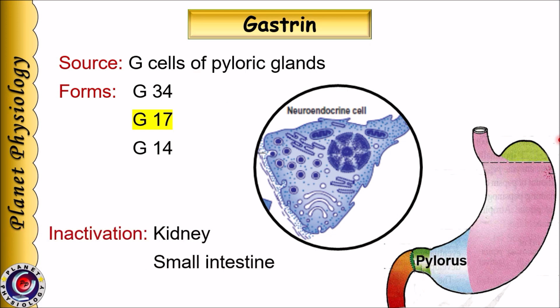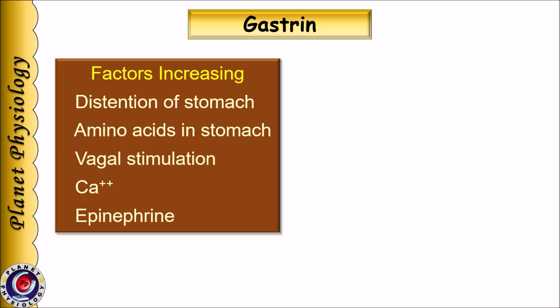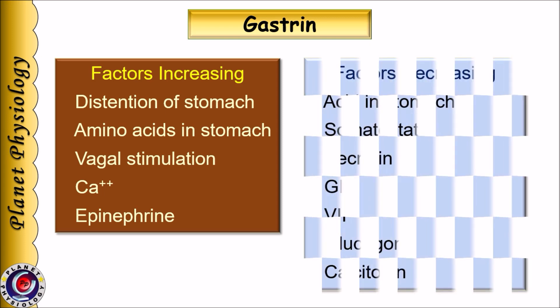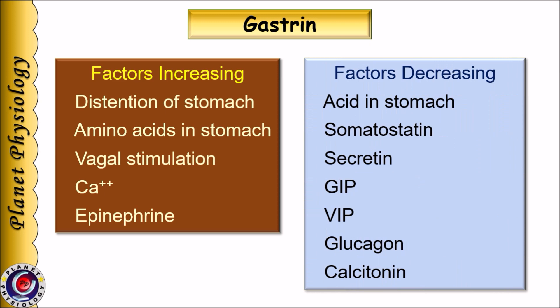G17 has a half-life of two to three minutes in circulation and is then inactivated in the kidneys and small intestine. Gastrin secretion is increased by distension of the stomach, presence of amino acids in the stomach, vagal stimulation, calcium ions, and epinephrine. Its secretion is decreased by excess acid in the stomach — this is a negative feedback action, partly mediated via the action of acid on the G cells and partly by secretion of somatostatin.